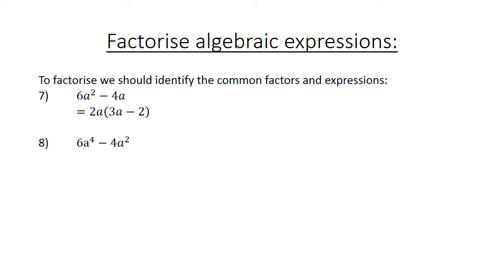6A to the power of 4 minus 4A to the power of 2. The common factor equals 2A to the power of 2, and we have in brackets (3A to the power of 2 minus 2).